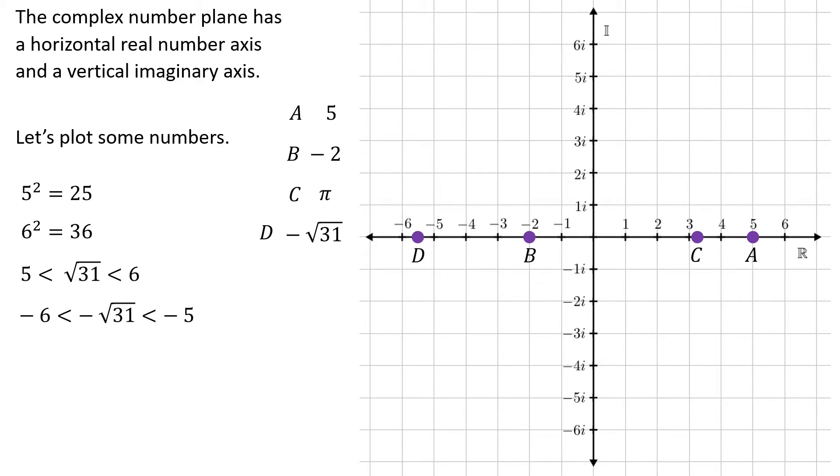And then I can just put a dot somewhere between negative 6 and negative 5, and I can label it D. Of course, if you have a calculator at hand, notice that's a negative symbol I typed in front, not the subtract sign. Negative square root of 31, sure enough it's about negative 5.56 and then there's just a bunch more decimal points after that.